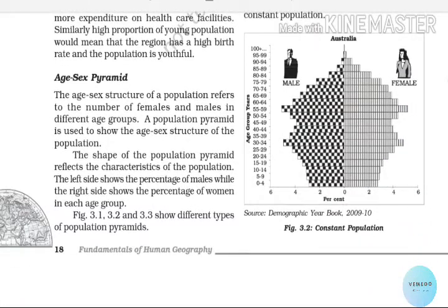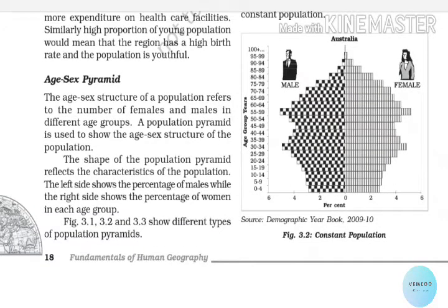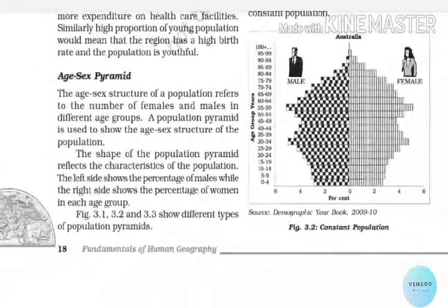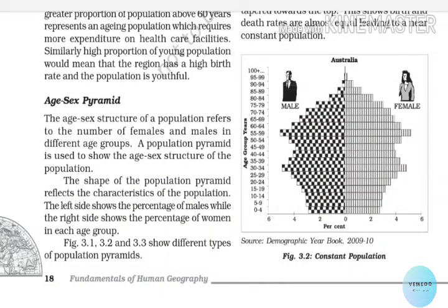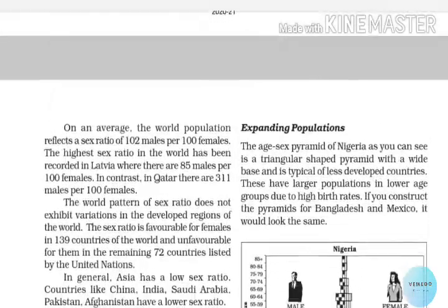As we wrap up, there is an age-sex pyramid — also called an insect pyramid. There are two main categories. In the past there are three groups, and this is the age-sex pyramid. The right percentage is female and the left percentage is male. This age-sex pyramid has three different types.